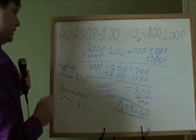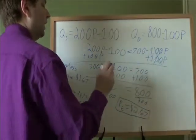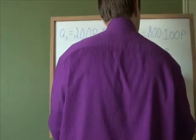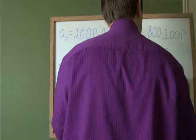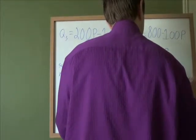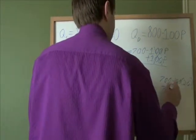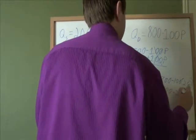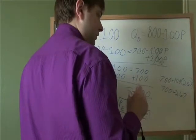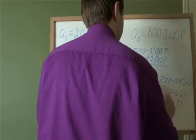And then our quantity will be the same thing. We take this $2.67, we plug it into either of these formulas. I'm going to plug it into the new quantity demanded because that one seems a little bit easier. So 700 minus 100 times 267, well, 100 times 267, that's 267 instead of 2.67. And then subtracting those we get the same thing we had before, equilibrium quantity of 433.